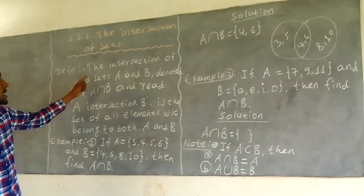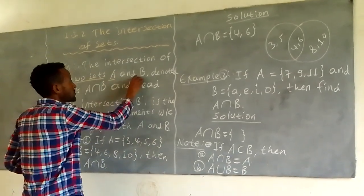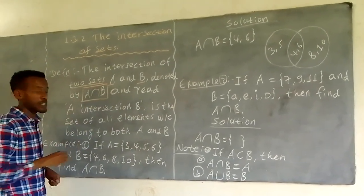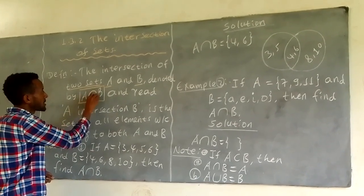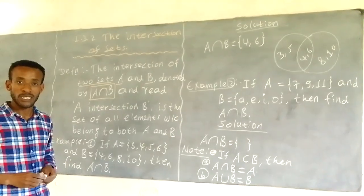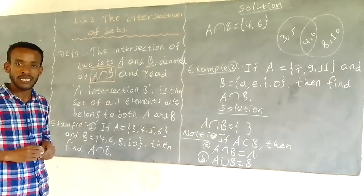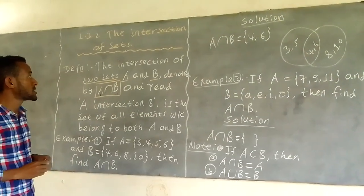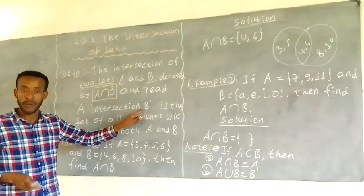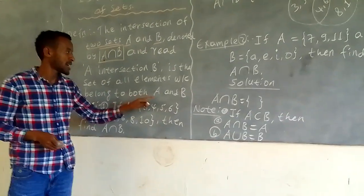Definition. The intersection of two sets, A and B, denoted by A intersection B. A intersection B is the set of all elements which belongs to both A and B.